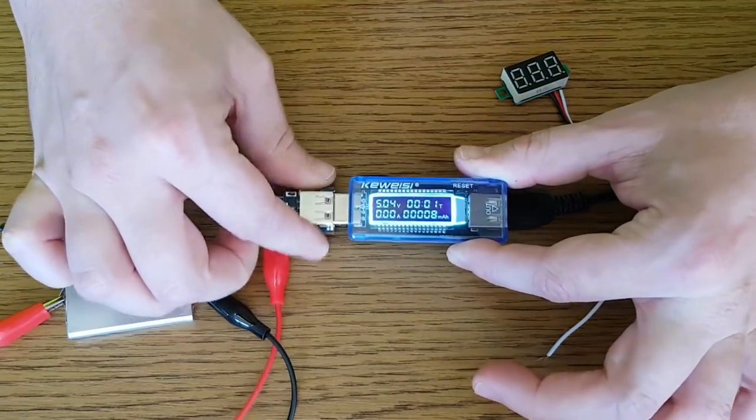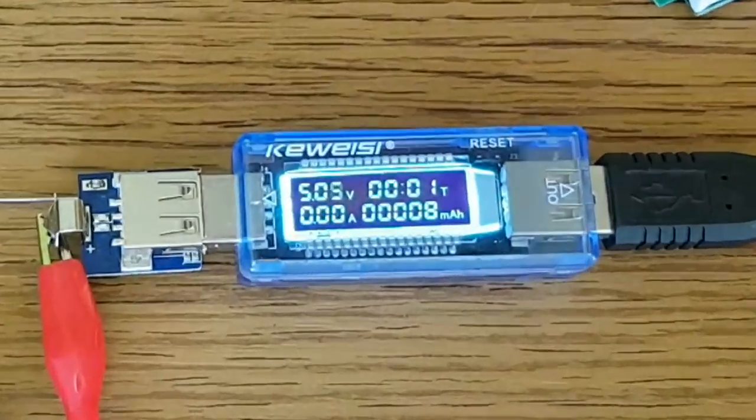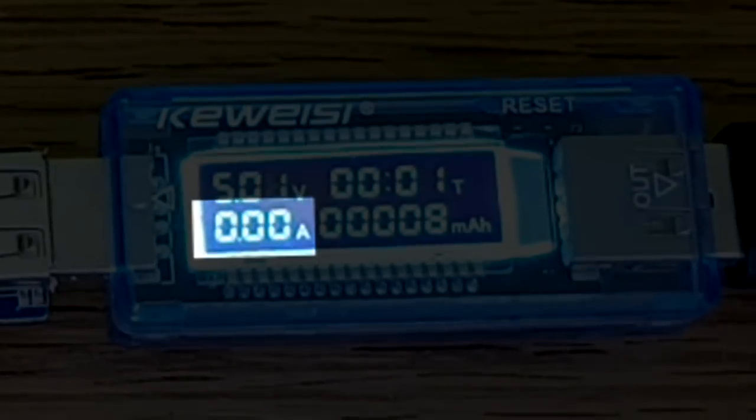So how little current does the voltmeter actually needs? Let's find out. Less than 10 milliamps.